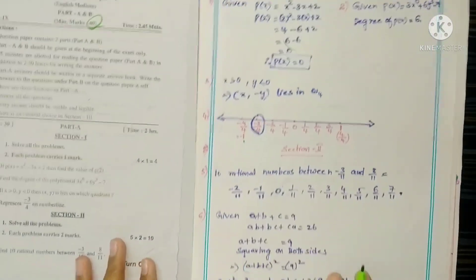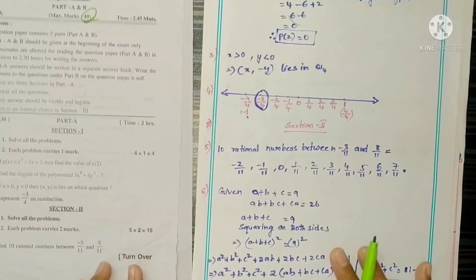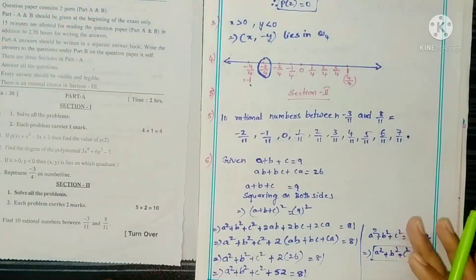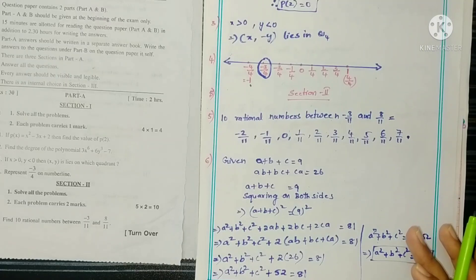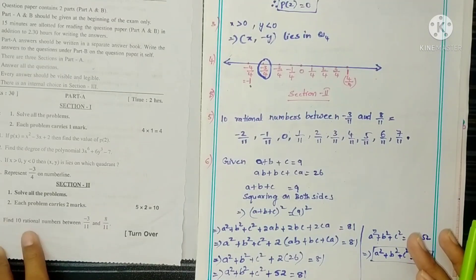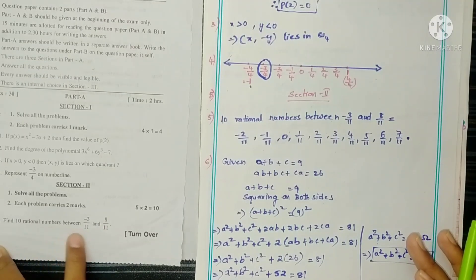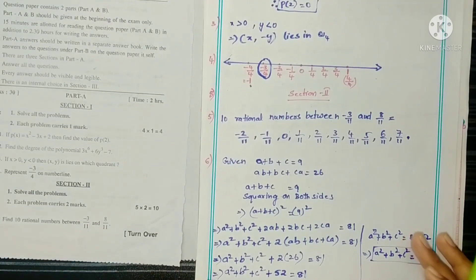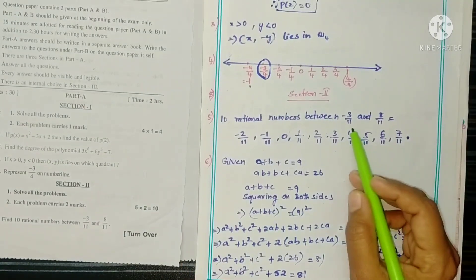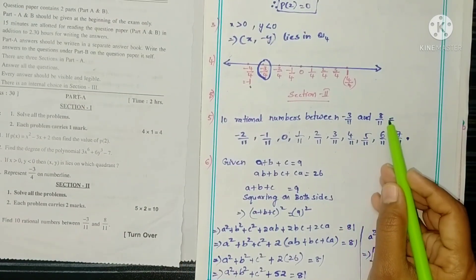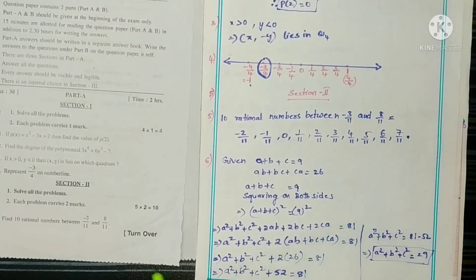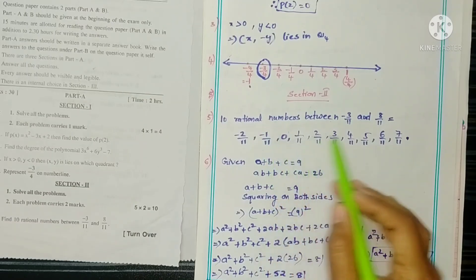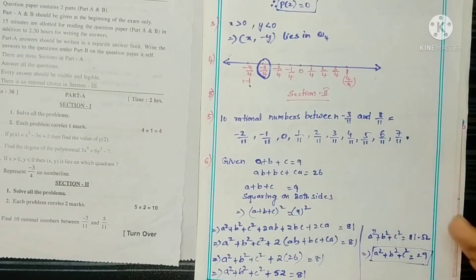Section 2 — two marks questions. Question 5: Find 10 rational numbers between -3/11 and 8/11. The rational numbers between them are: -2/11, -1/11, 0/11, 1/11, 2/11, 3/11, 4/11, 5/11, 6/11, 7/11.